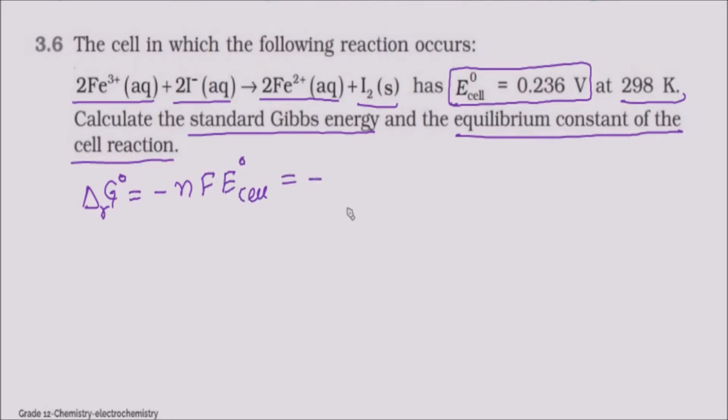Is this n how much? The value of n is 2. Fe3+ becomes Fe2+. Fe3+ gained 1 electron to become Fe2+. So multiply this by 2. 2 Fe3+ means 2 electrons gained.